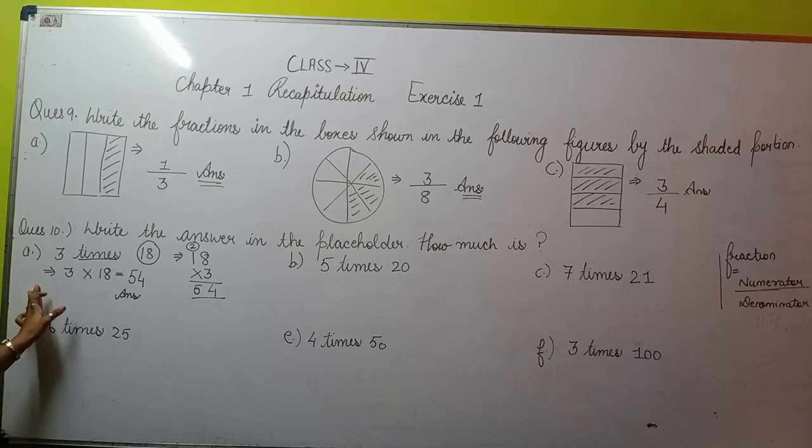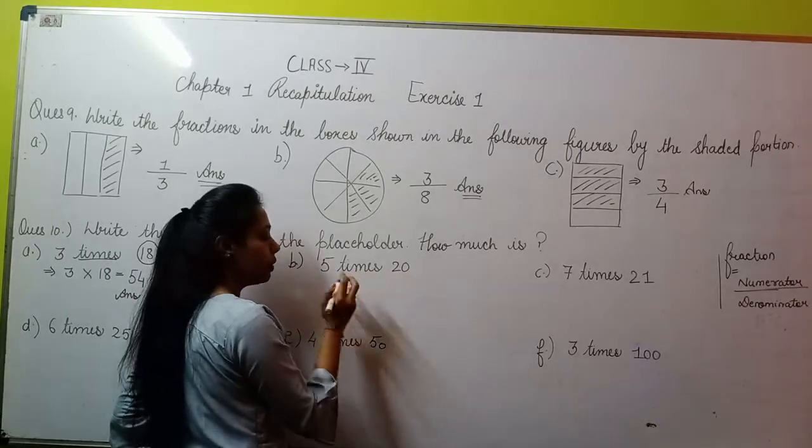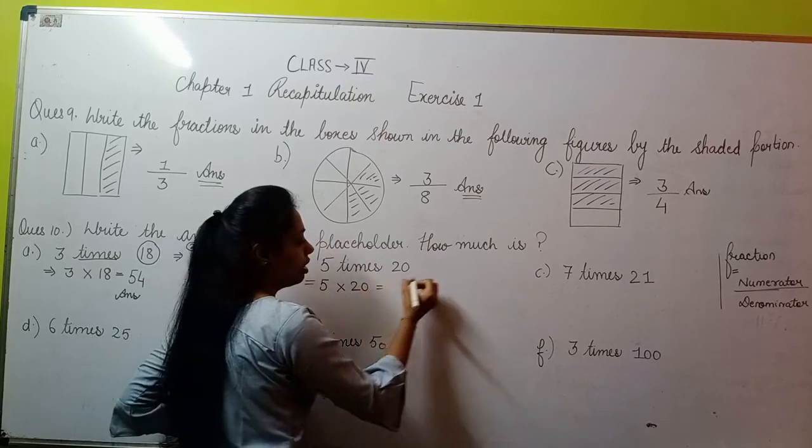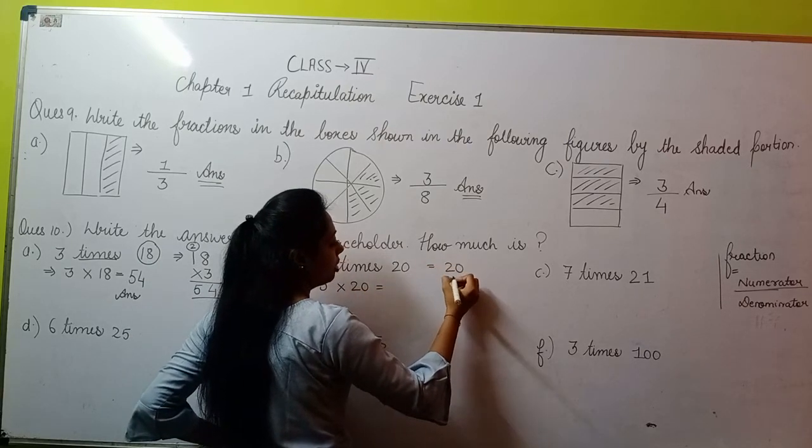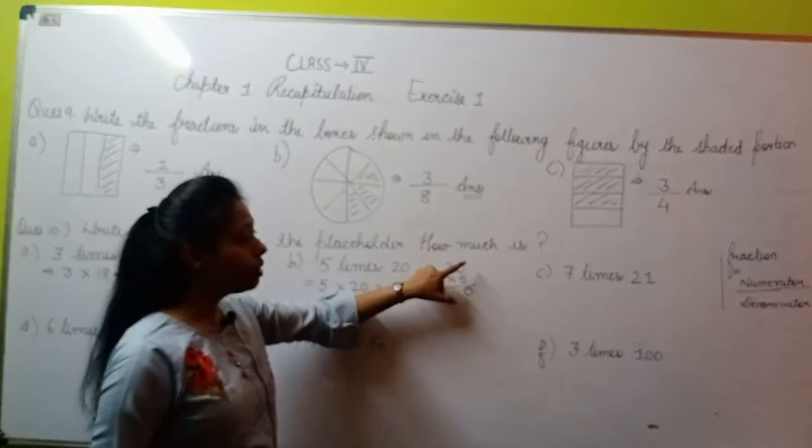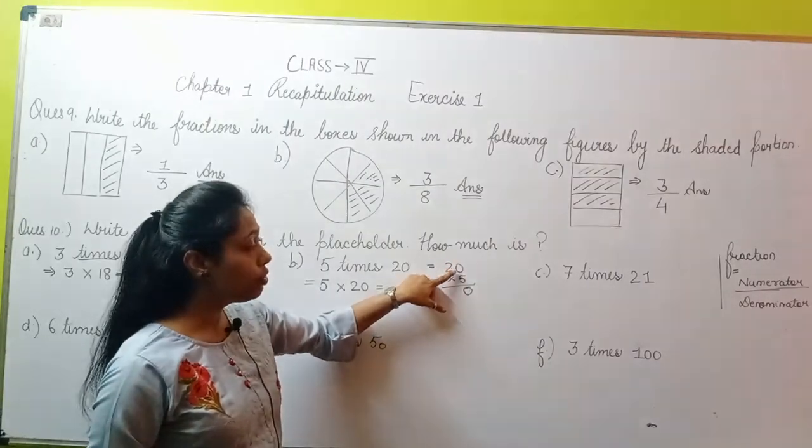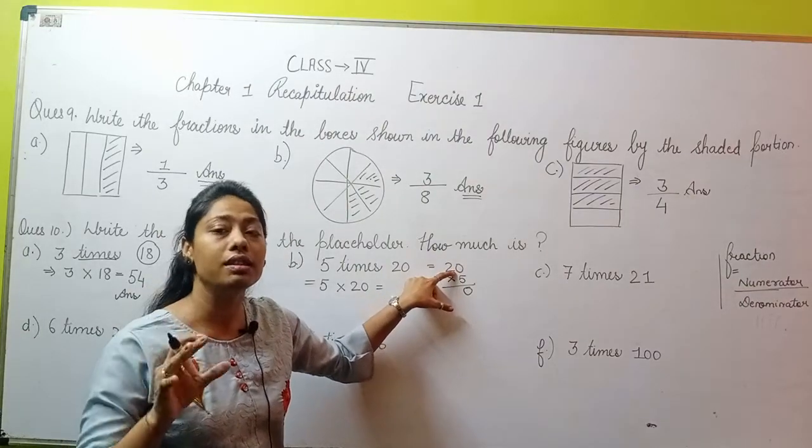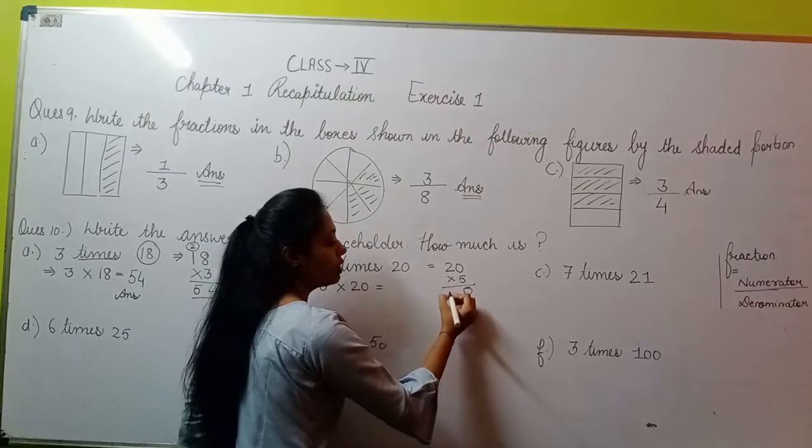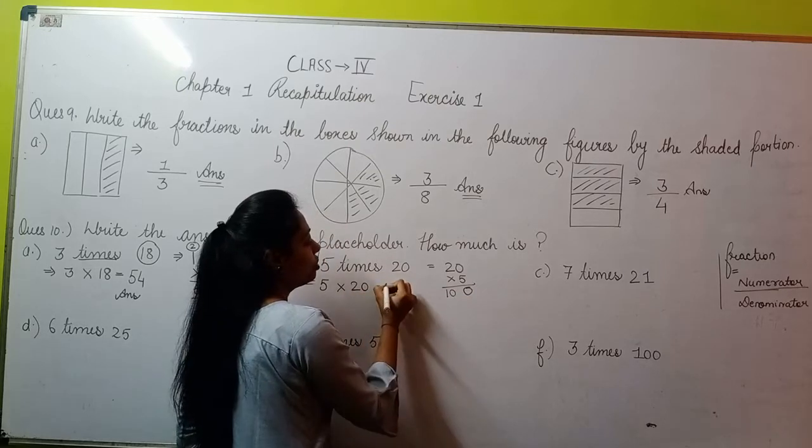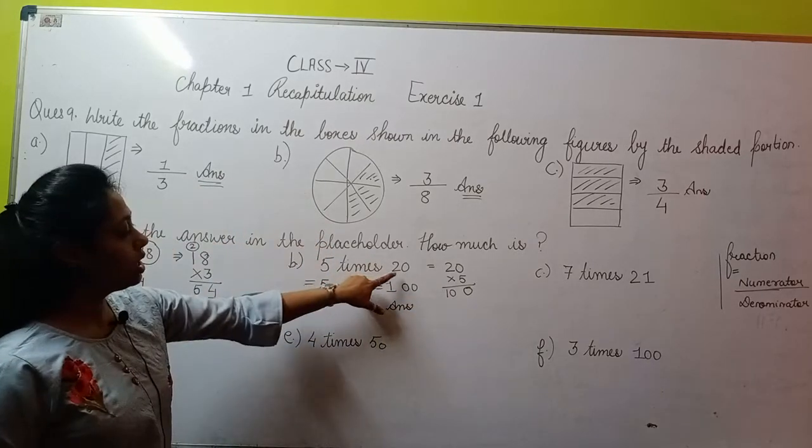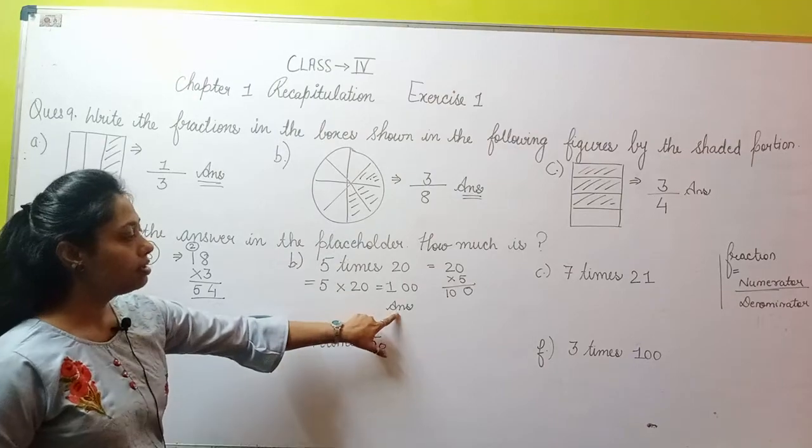This is your answer for part A. Similarly, now we'll solve part B. Part B is also given: 5 times 20. 5 times 20 means 5 multiply by 20. Let's multiply it: 5 zero is 0. Why? Because we learned last year that whenever we multiply 0 by any digit, the answer is always 0. Here I multiplied 0 by 5, but still the answer is 0. 2 fives is 10. That means 5 into 20 gives you 100. 100 is your answer.